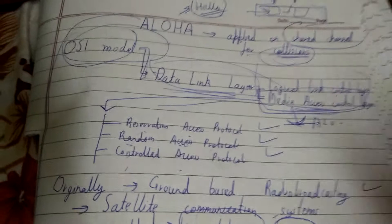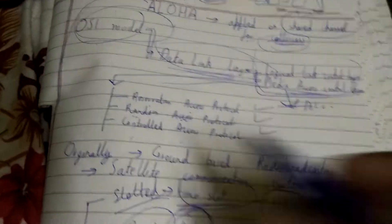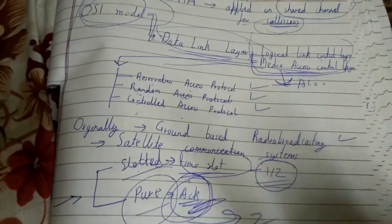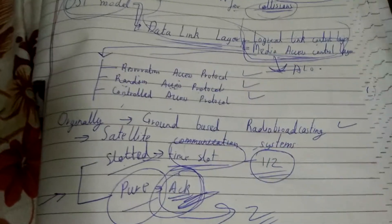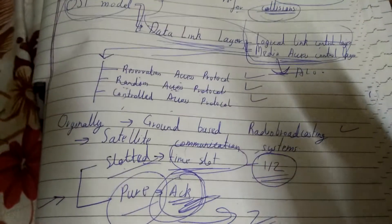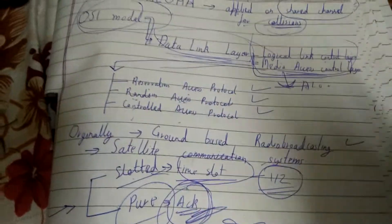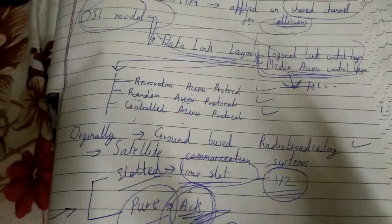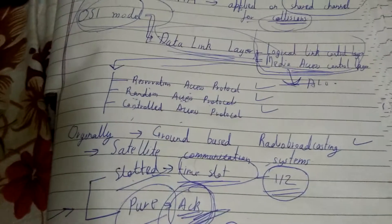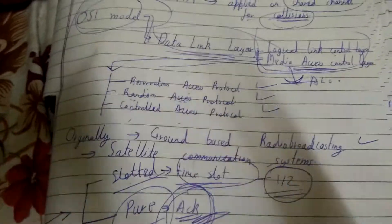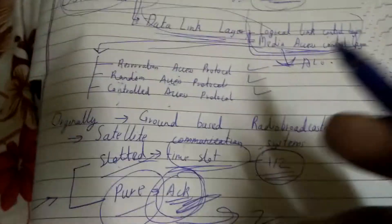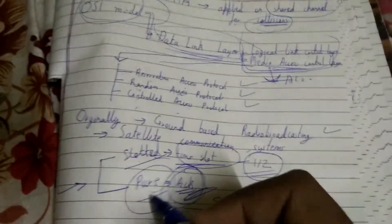ALOHA is of two types: slotted and pure. In slotted ALOHA, a particular time slot is provided to a channel for communication. If the channel is not able to share all of its data packets within that time slot, it has to wait until the next time slot is provided.